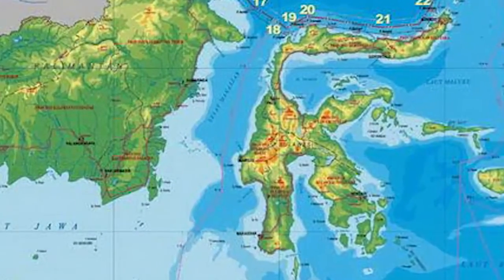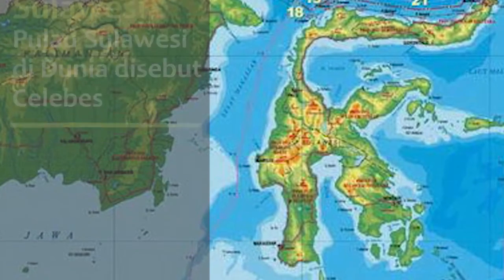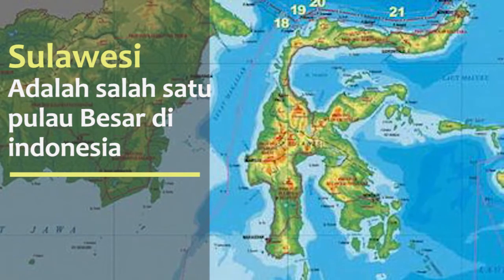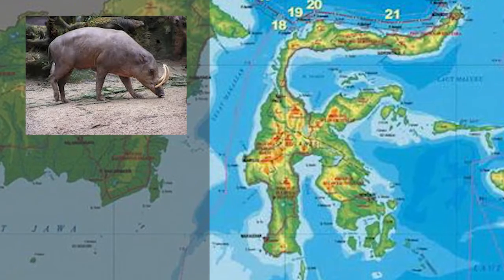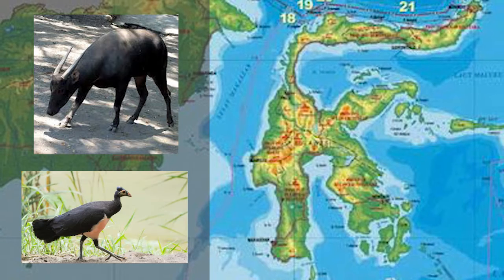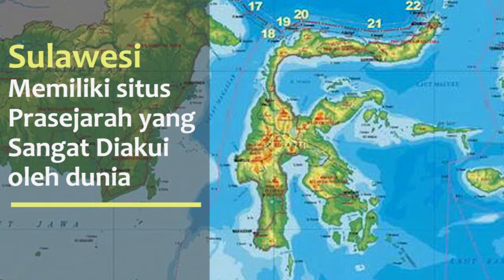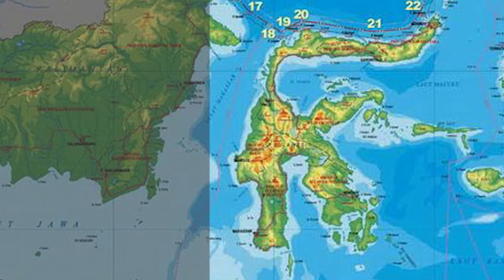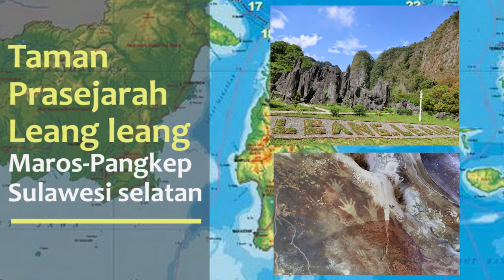Pulau Sulawesi, atau yang dalam bahasa Inggris disebut Celebes, merupakan salah satu kepulauan terbesar di Indonesia. Kepulauan Sulawesi terkenal dengan berbagai fauna endemik yang unik dan langka, seperti Babirusa, Tarsius, Anoa, Maleo, dan masih banyak lagi. Selain itu, Sulawesi menyimpan berbagai peninggalan prasejarah yang penting. Lukisan yang ditemukan di Goa Maros, Pangkep pada tahun 2019 diklaim menjadi lukisan gua tertua di dunia.